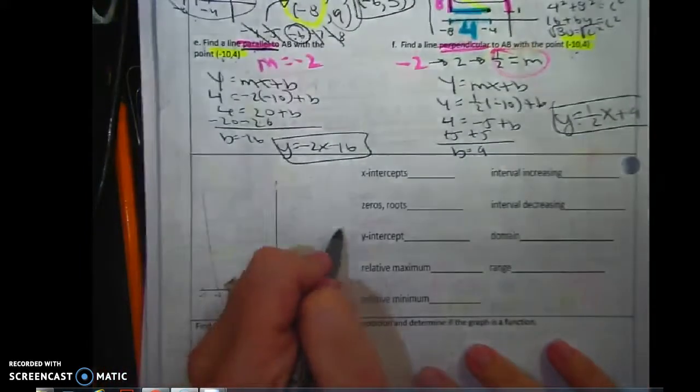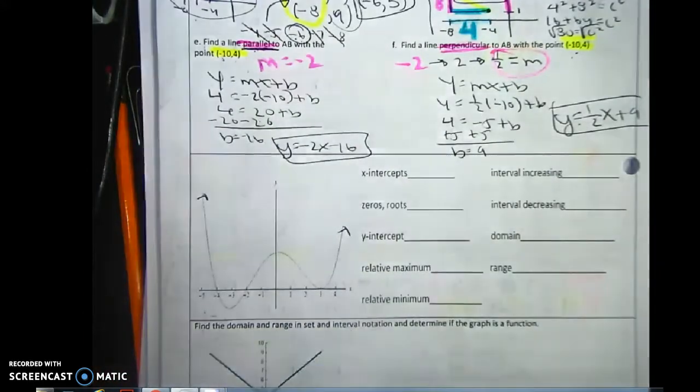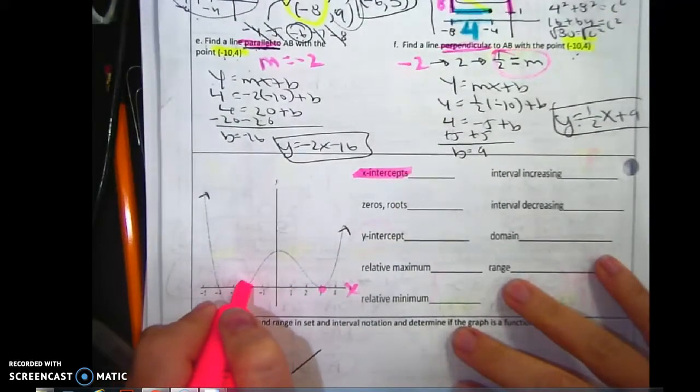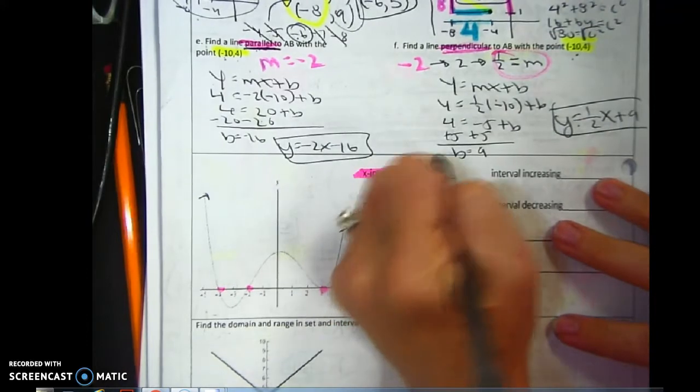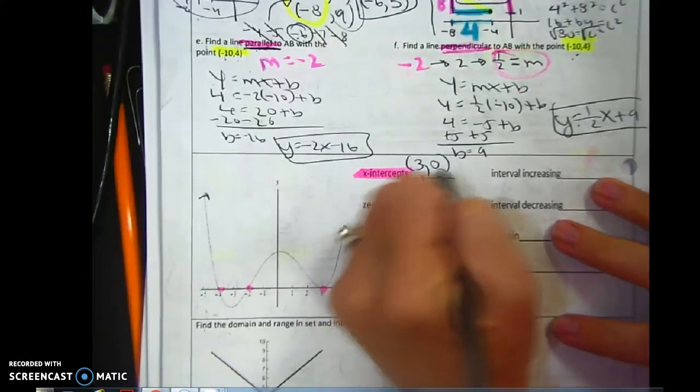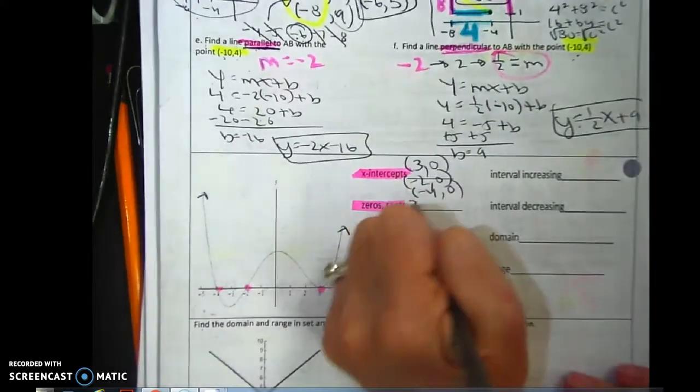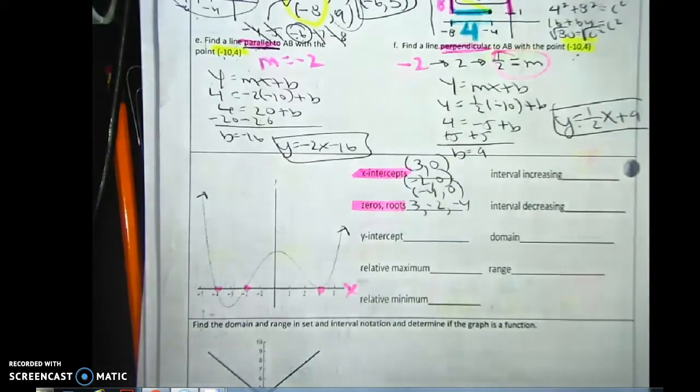So with this, can you do me a favor and pretend that it goes forever? x-intercepts. The x-intercept is where it crosses on the x-axis. Boom, boom, boom. You need to write it as points. 3 comma 0, negative 2 comma 0, and negative 4 comma 0. And when you're writing the zeros or the roots, 3, negative 2, negative 4, doesn't matter the order.